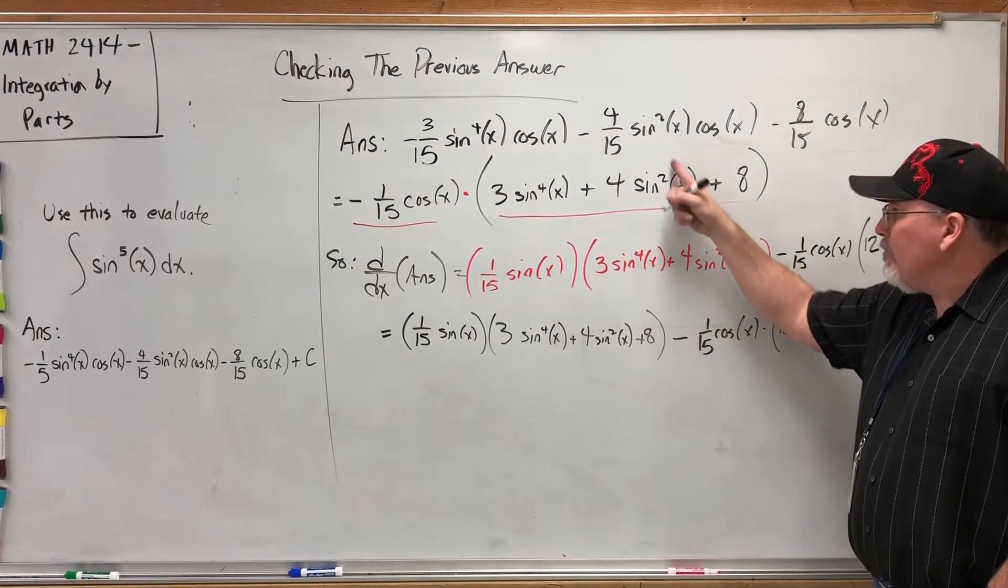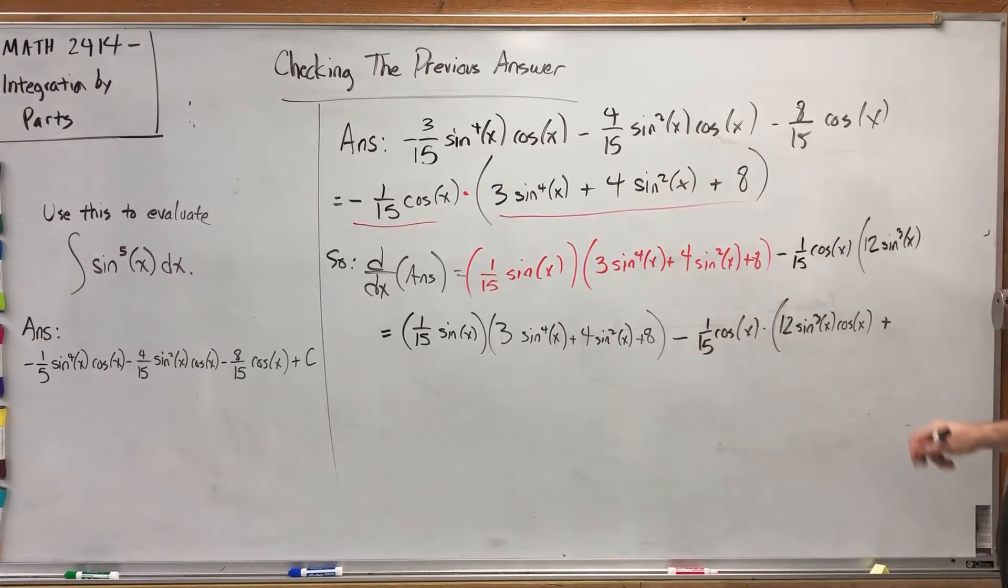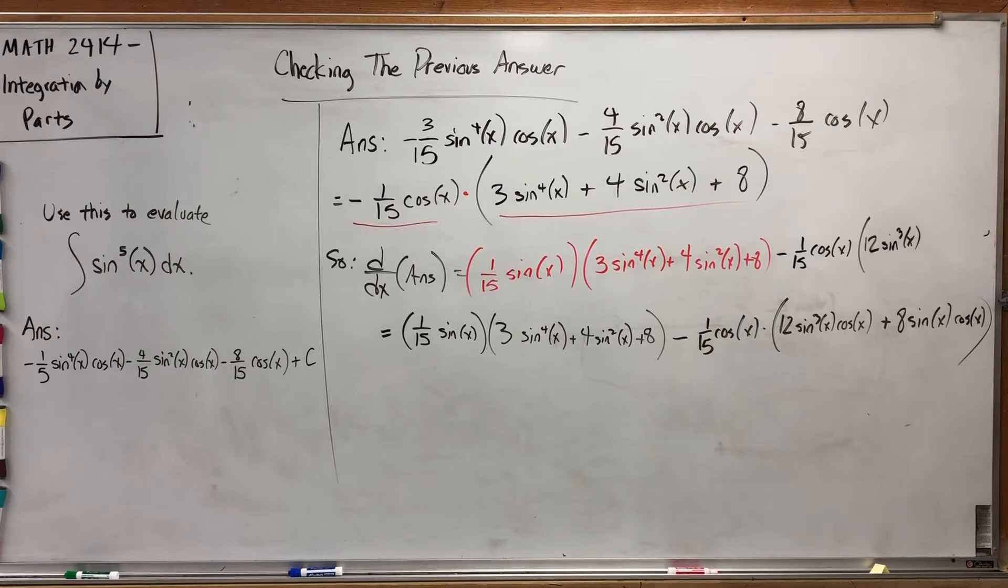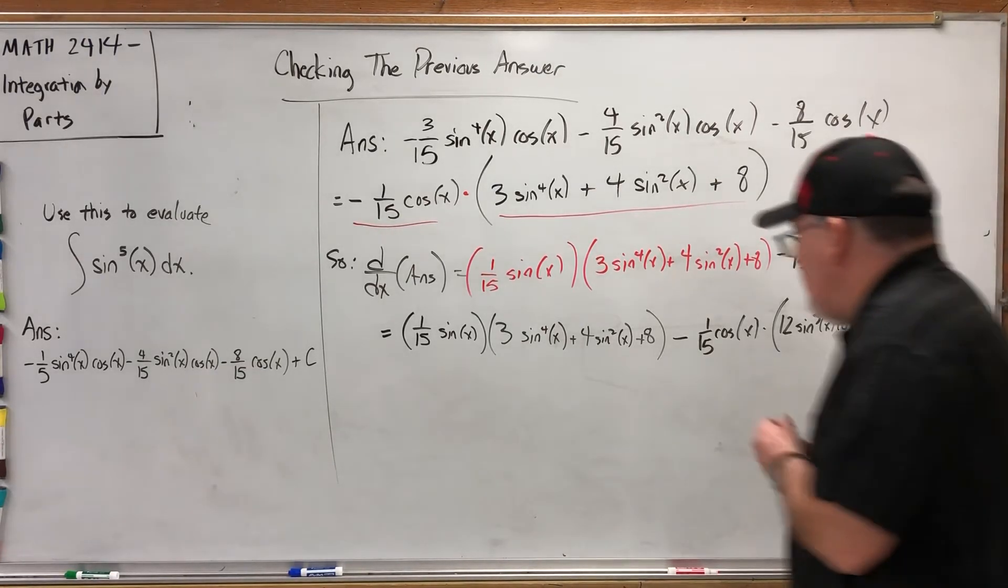And then the second half of the product rule is the first, which is negative one-fifteenth cosine of X, times the derivative of the second, and that would be twelve sine to the third power of X times cosine, which comes in from the derivative of the inside via the chain rule, plus derivative on the power—bring down the two, get eight times sine to the first power of X, and then the chain rule says times the derivative of the inside, derivative of sine is cosine. I'm out of room, but that's okay because the derivative of the eight is zero, so I can close this off.